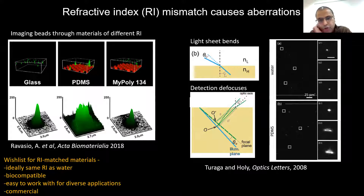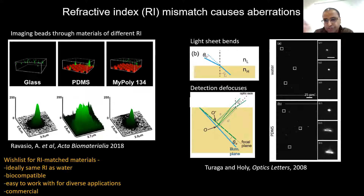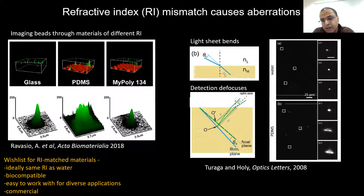In light sheet microscopy, this issue can be a real problem if you're using a water-dipping lens. You have two problems: one is that the light sheet itself will bend from low to high refractive index. Even more serious, you can get a detection defocus, a focal shift. This was shown by Tim Holley's paper, where beads imaged at progressive distances from an index mismatch like a PDMS microfluidic get progressively more aberrated the further from the boundary you are, because the detection plane defocuses.